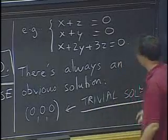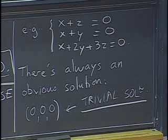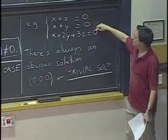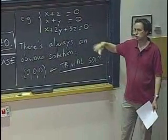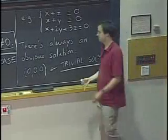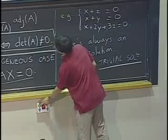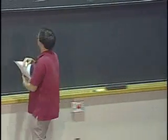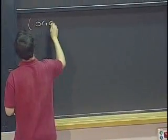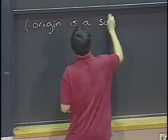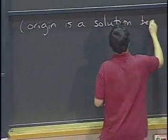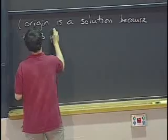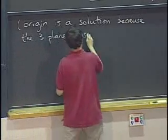So there's always this trivial solution. And, what's the geometric interpretation? Well, having zeros here means that all three planes pass through the origin. So, certainly the origin is always a solution. The origin is always a solution because the three planes pass through the origin.